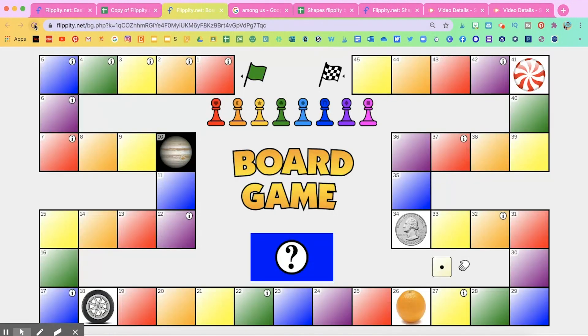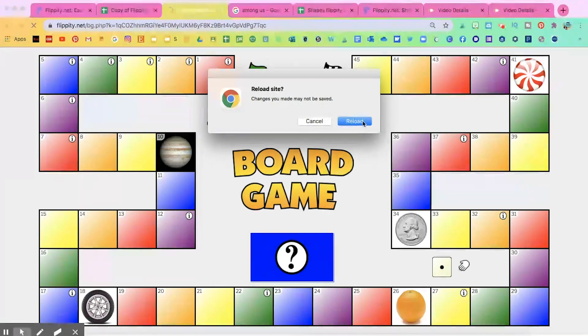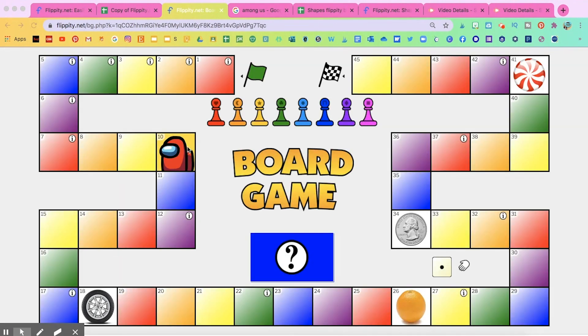And here I'm going to erase that image and paste the new one that I chose of Among Us. And if I go back to my game and I refresh the page, you'll see that it appeared here on number 10. And you would copy the same process for every single visual.